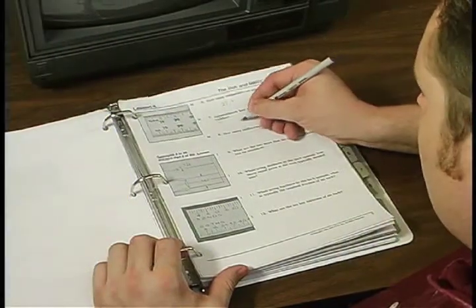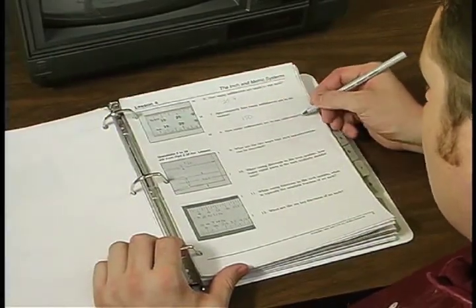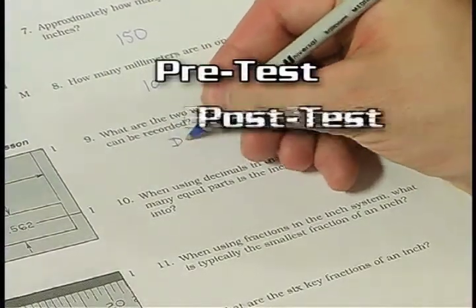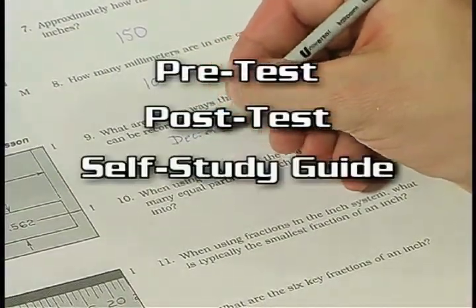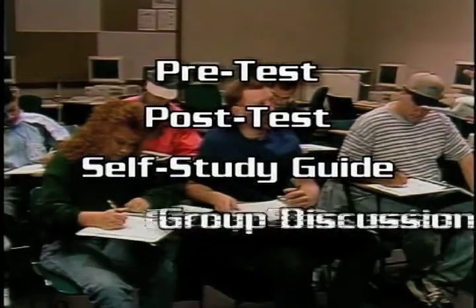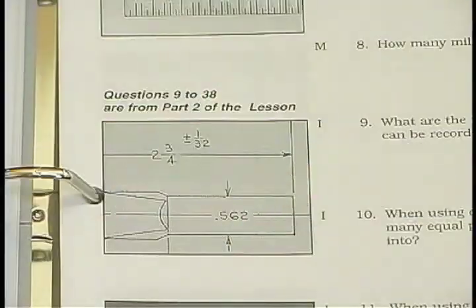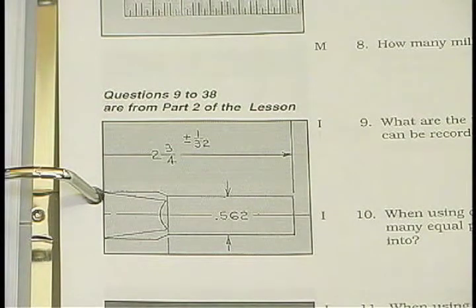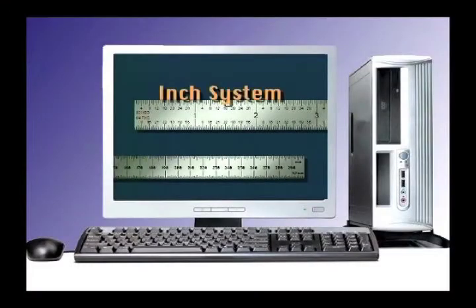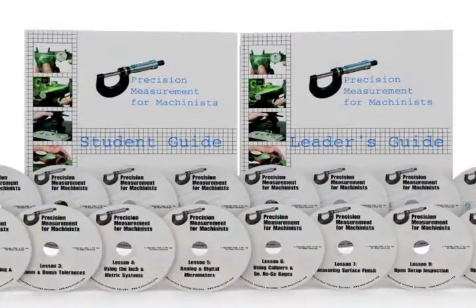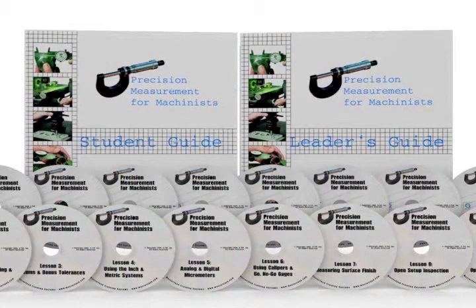Worksheets for each of the ten lessons are found in the student guide. They can be used as a pre-test, post-test, self-study guide, or as a tool for group discussion after watching a lesson within the class. The questions are divided into groups which match the divisions found in the instructional videos. This allows all students to quickly locate the source of an answer within a lesson video. Answers to all the student guide questions are found in the leader's guide.